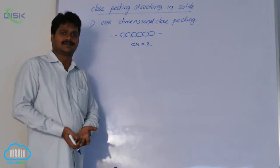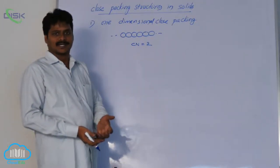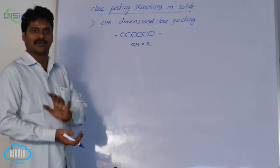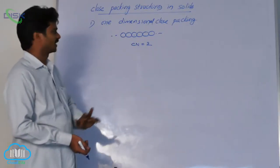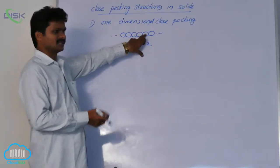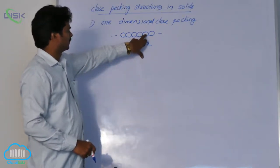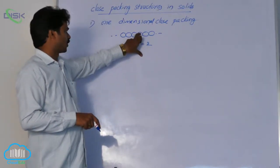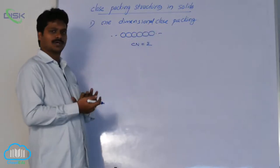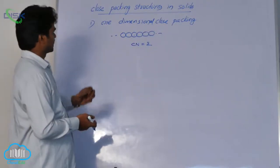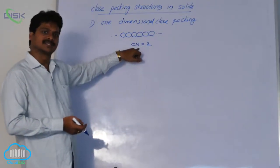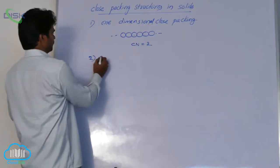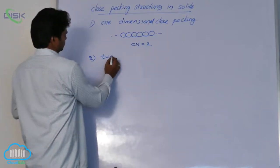Coordination number is the number of nearest neighbors of an atom. Consider any atom in this close packing — its coordination number is two, meaning it is in contact with two other spheres. This is about one-dimensional close packing. Now let us see about two-dimensional close packing.